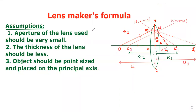The lensmaker's formula assumptions: the aperture of the lens should be very small, the thickness of the lens should be negligible, the object should be point-sized and placed on the principal axis.